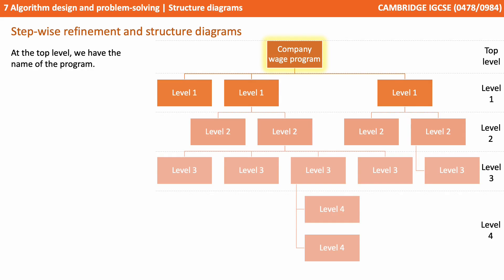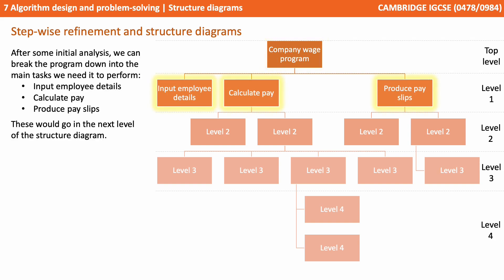So at the top level here we have the name of the overall program. After some initial analysis we can break the program down into the main tasks it needs to perform. Our program here is going to be a company wage program, so we are breaking it down into three main areas: input the employee's details, calculate their pay, and produce pay slips.